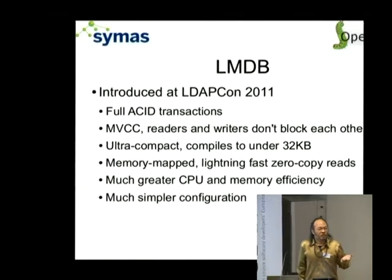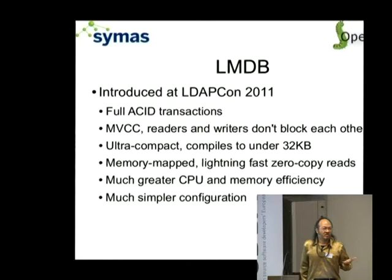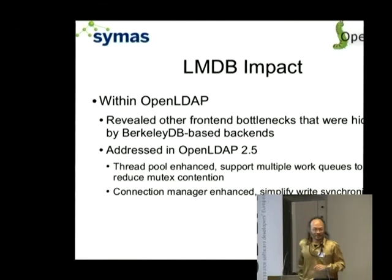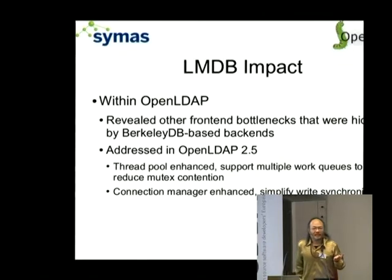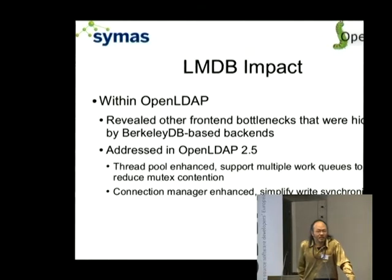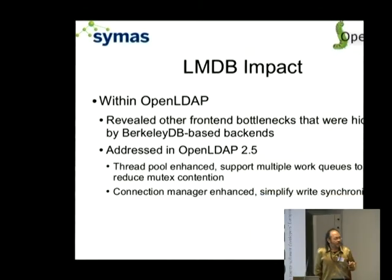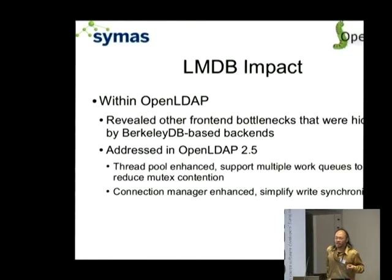With OpenLDAP, we were using Berkeley DB. We must have had 20 or 30 configuration parameters that you needed to be aware of to tune it for optimum performance. With LMDB, there are no optimization parameters — much simpler. The effect LMDB had on OpenLDAP was that it revealed some other shortcomings we had in the rest of the OpenLDAP code stack. When we were working with Berkeley DB, there was enough overhead that it hid all of these details from us. Now that we've got a much more efficient backend, we've discovered some other deficiencies we can work on.